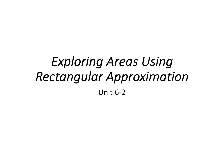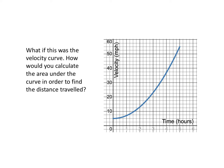This is unit 6-2: exploring areas using rectangular approximation. As we recall from our last lesson, we were talking about graphs where the vertical axis is velocity or speed and the horizontal axis is time — a velocity curve. We were asking ourselves how you would calculate the area under the curve in order to find the distance traveled.